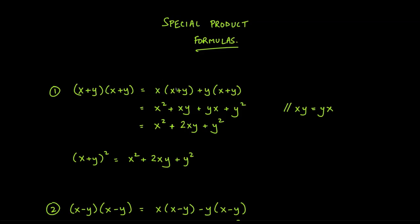Distributing x gives x squared and xy. For the second piece, y times x gives yx. Remember from the previous video that multiplication order doesn't matter — 3 times 5 and 5 times 3 both give 15 — so xy is the same as yx.